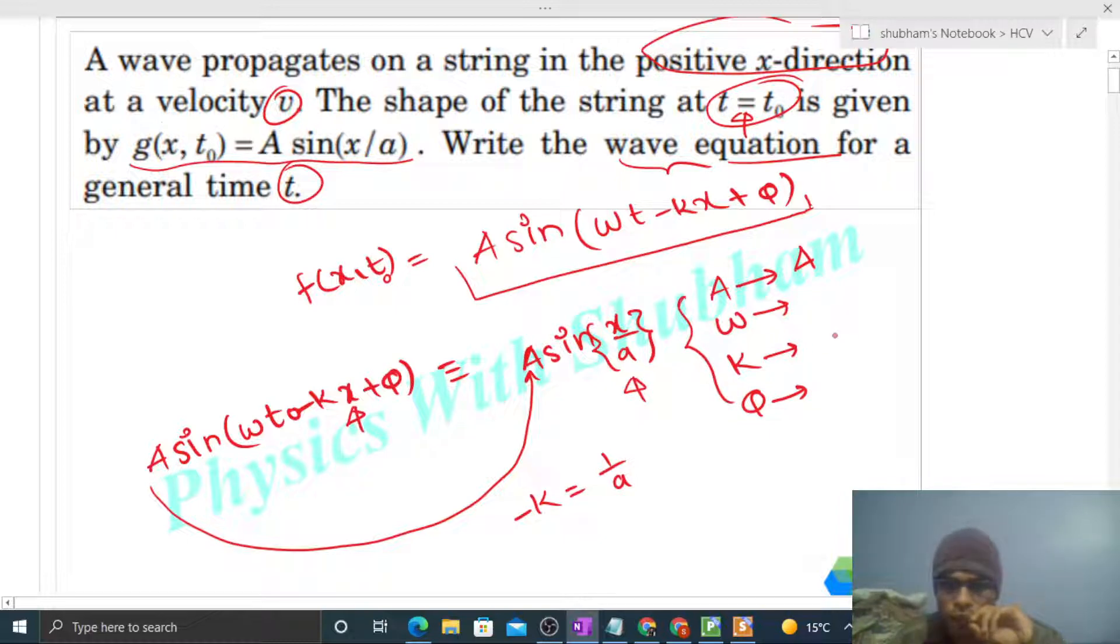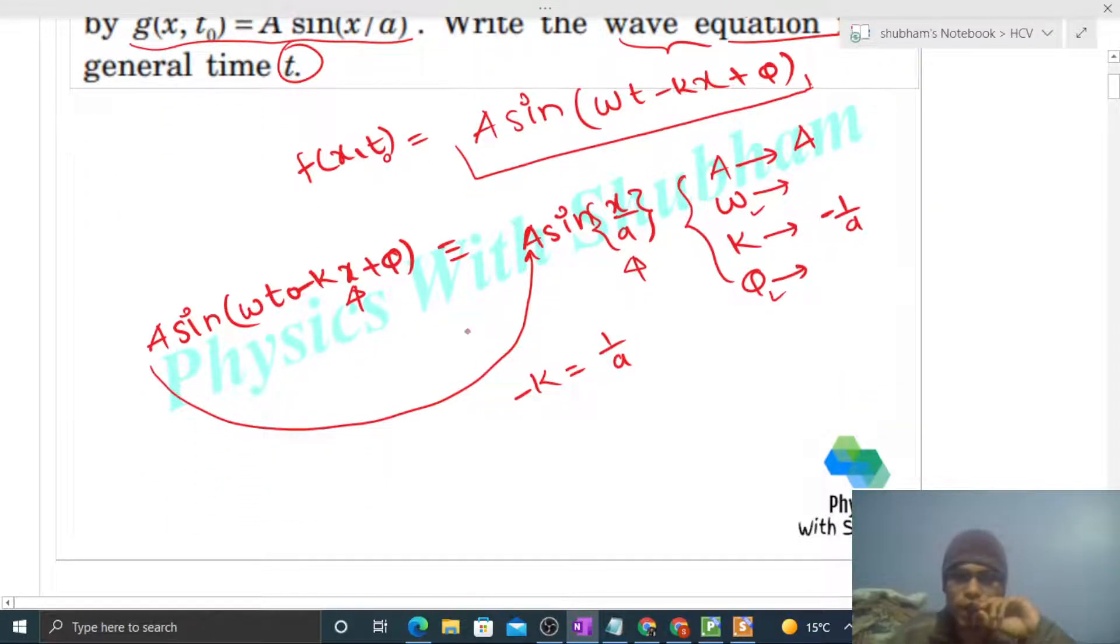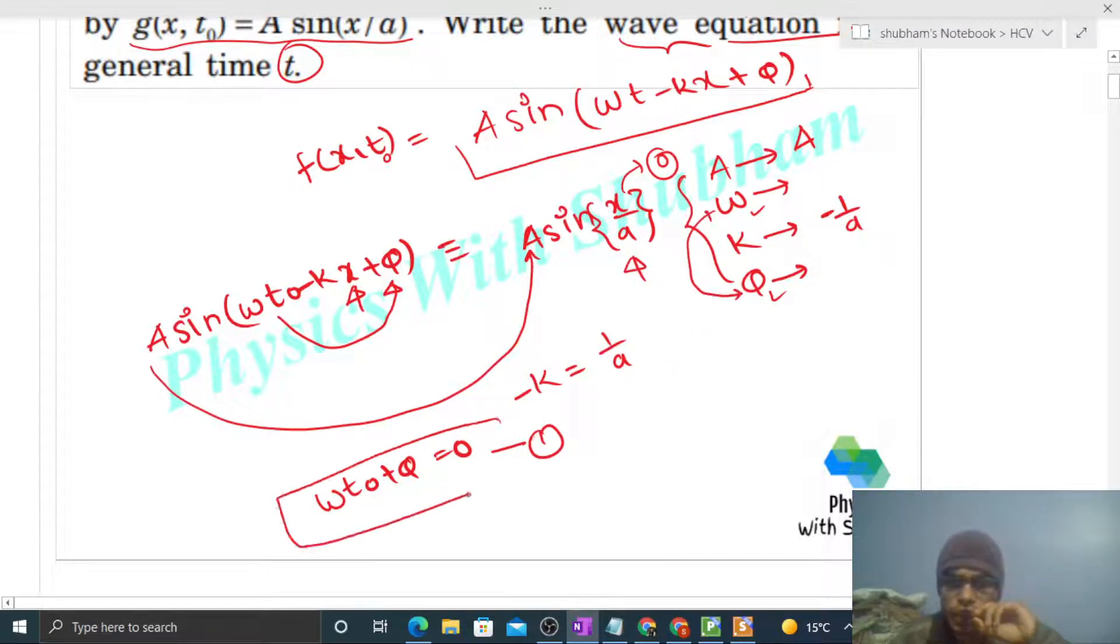Now omega we don't know and phi we don't know, but one more thing you can get from here: ωt₀ + φ equals zero. The value here is given as zero. So we have two variables, omega and phi, and we need two equations. One equation we got here.